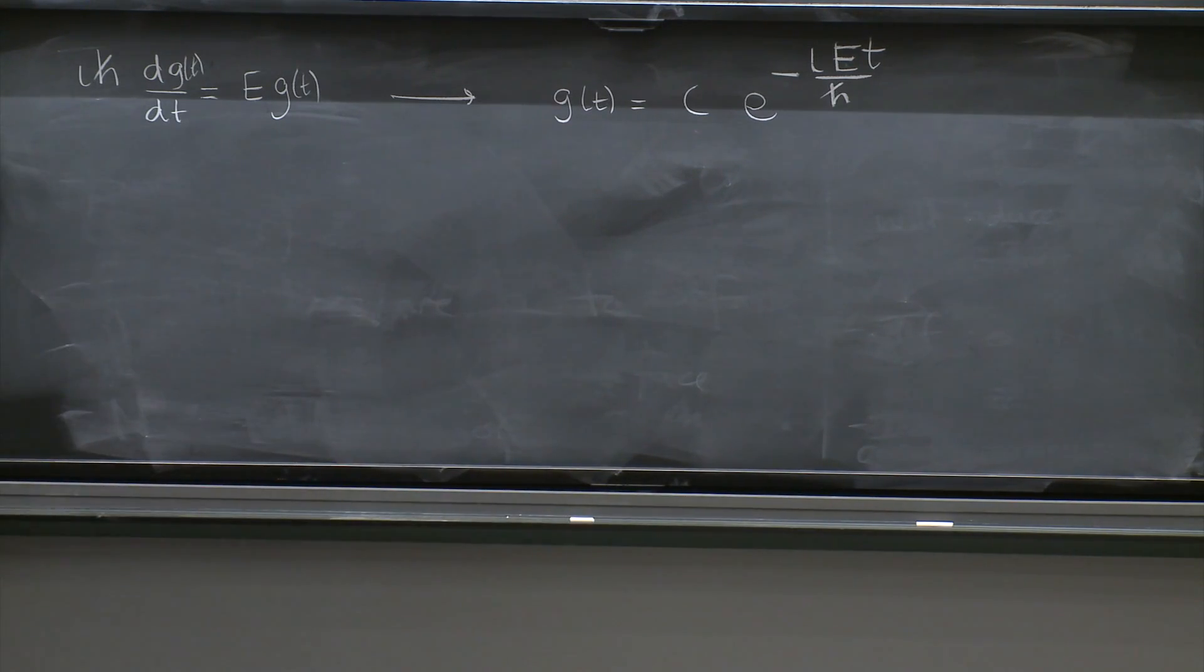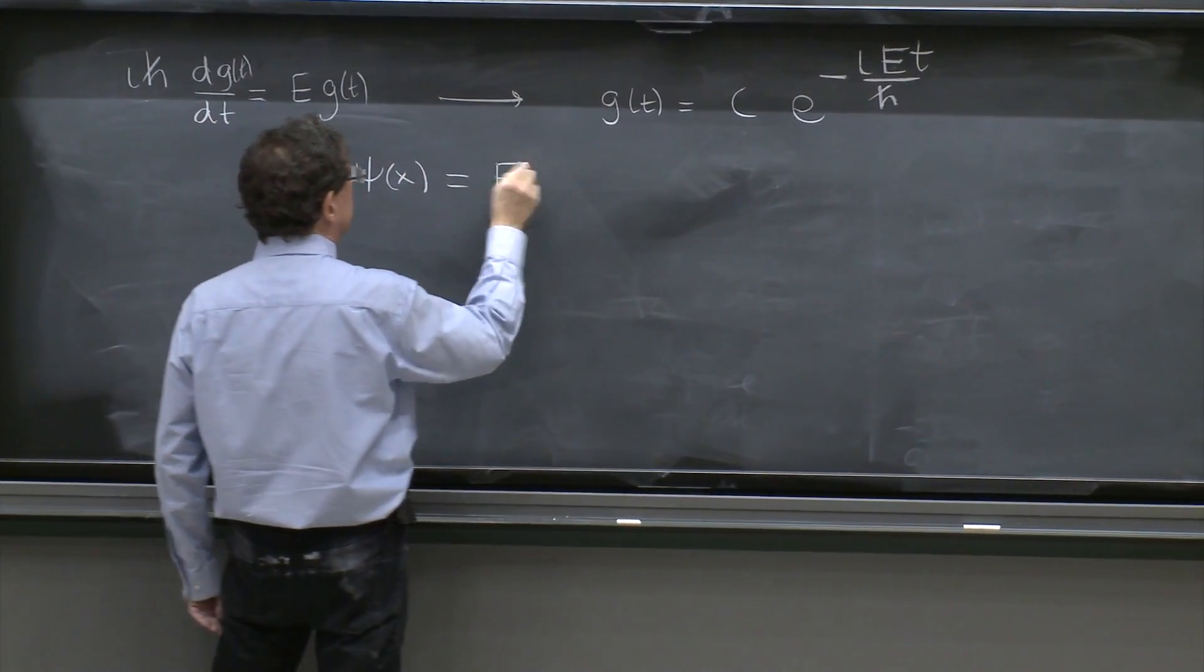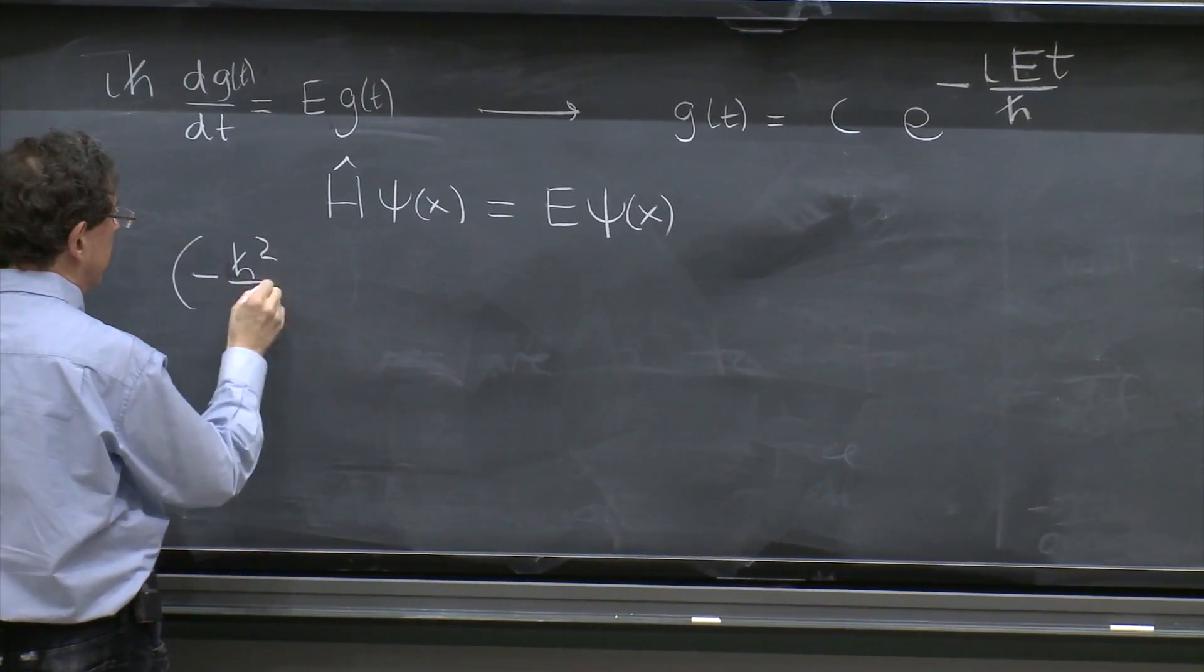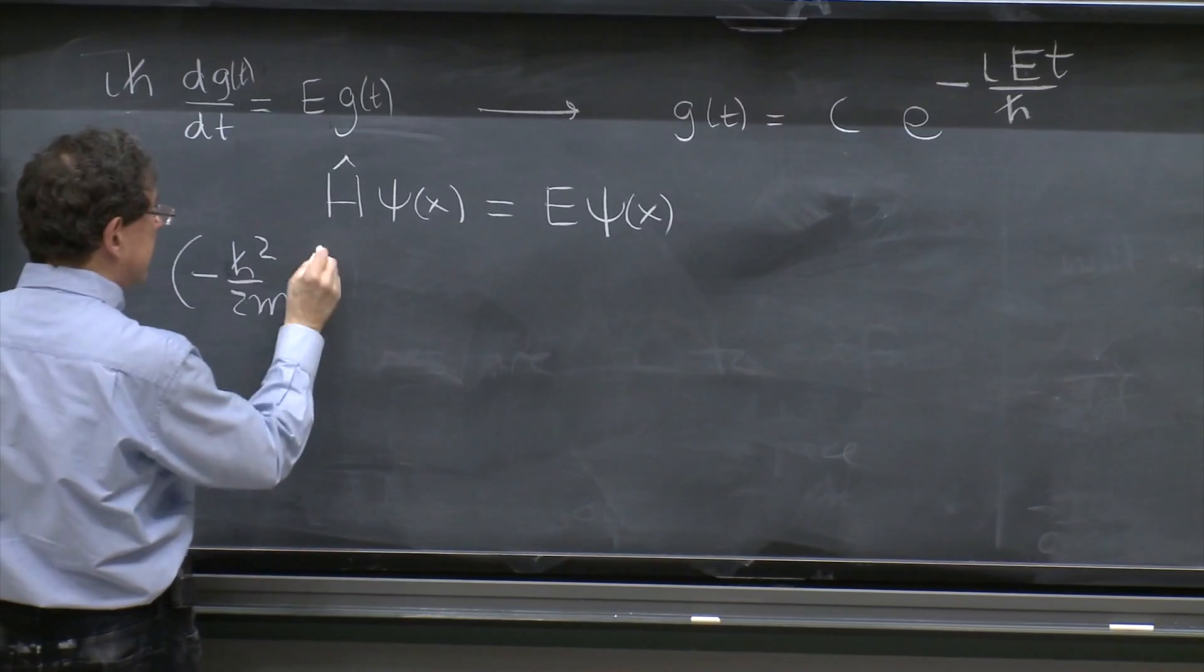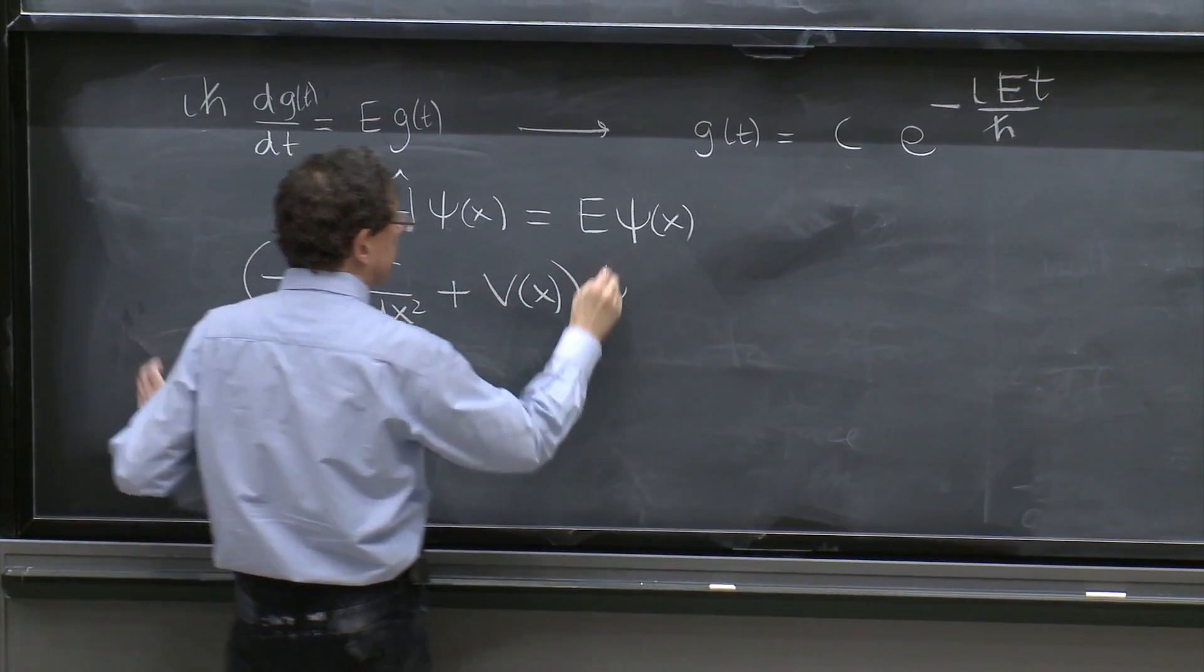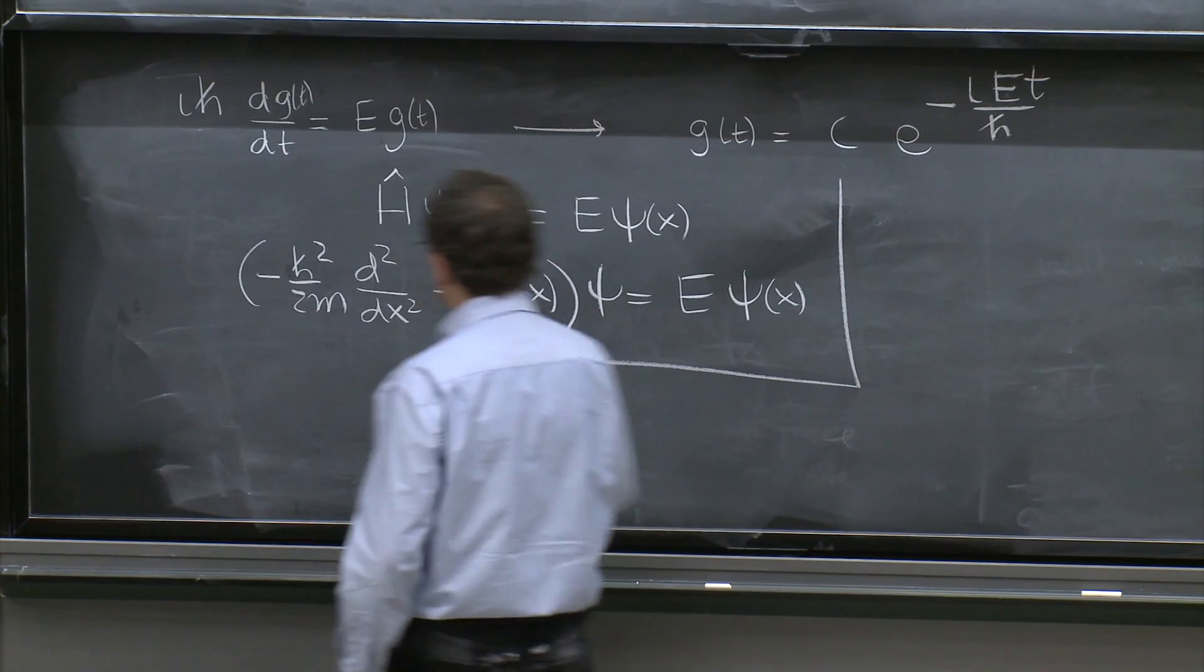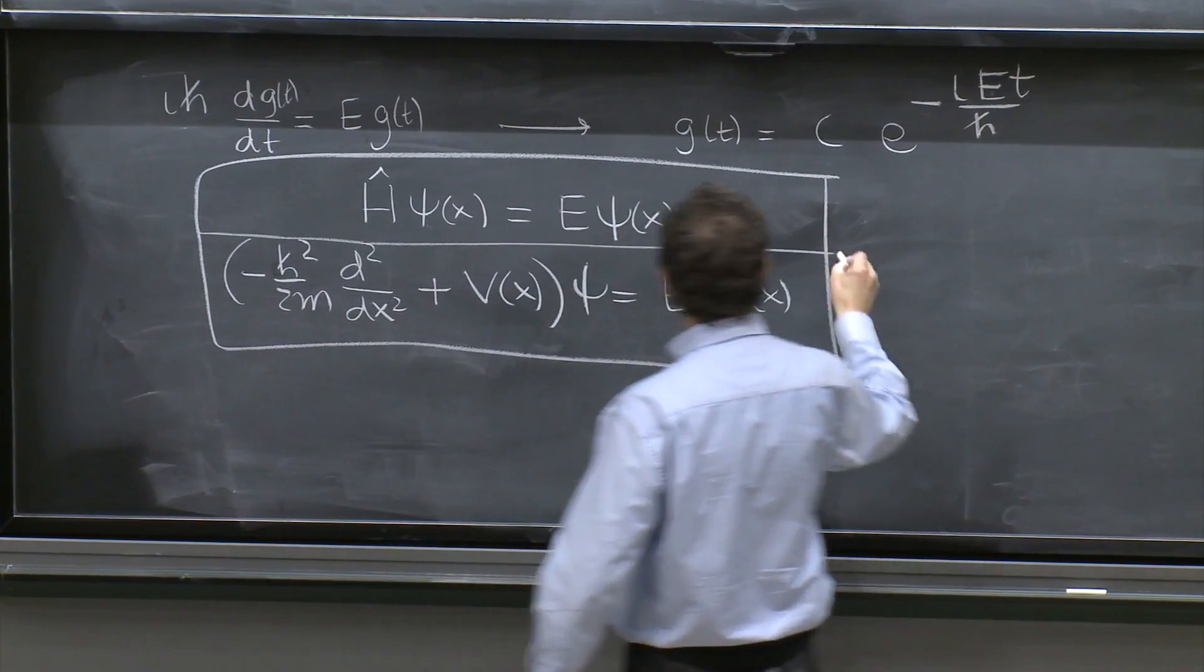What about the other equation? The other equation has become H-hat psi of x equal E psi of x. Or, you know, we should write at least once. Minus h-squared over 2m d²/dx² plus V of x psi is equal to E psi of x. This is the same equation that I'm boxing twice, because it's written in those two ways, and both ways are very important.